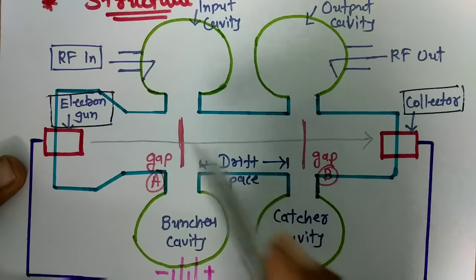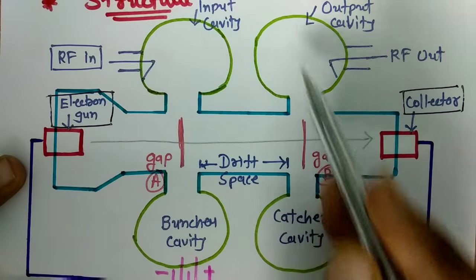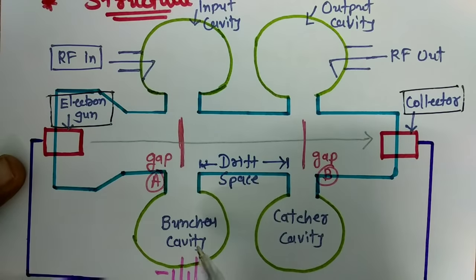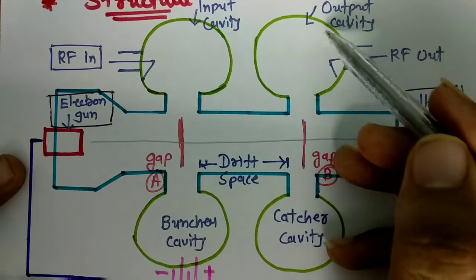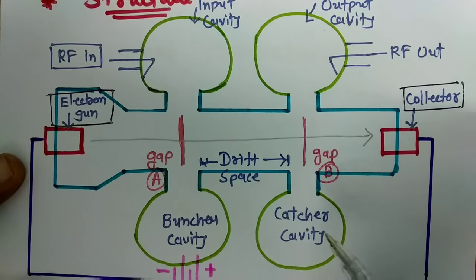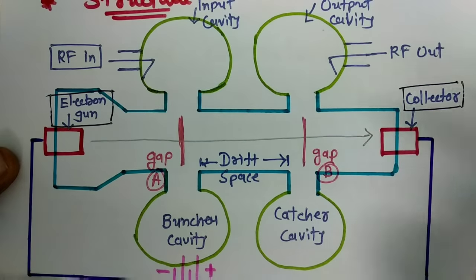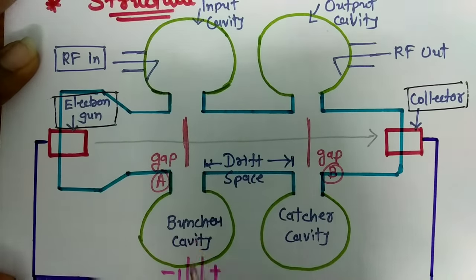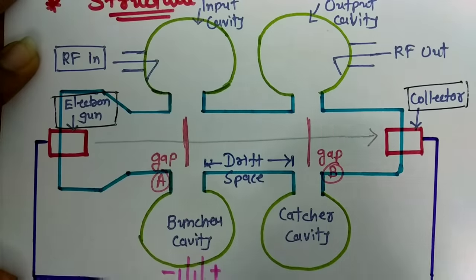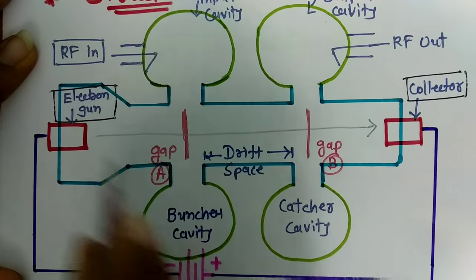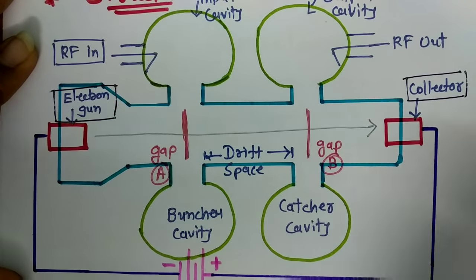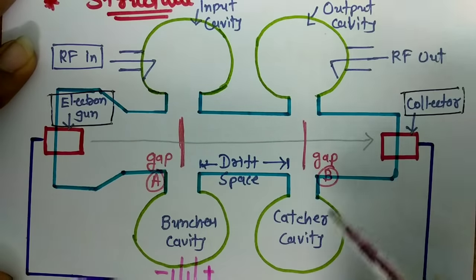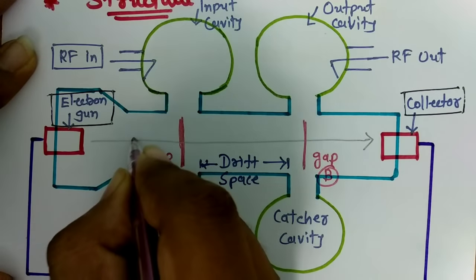In this structure, we can clearly see this is one cavity and this is the second cavity. The first cavity is the input cavity, also called the buncher cavity, and the second cavity is the output cavity, also referred to as the catcher cavity. We will examine how it bunches electrons and how it catches electrons in this session.